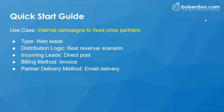Those are the steps to getting started quickly with your Babadu lead system. To recap, our use case was internal campaigns being driven to your landing pages, with direct posts coming into the system being sold to fixed price partners. The lead type was web leads, the distribution logic was the best revenue scenario, those incoming leads were a direct post from your website, and the billing method we used was invoice, with the partner delivery method being email.